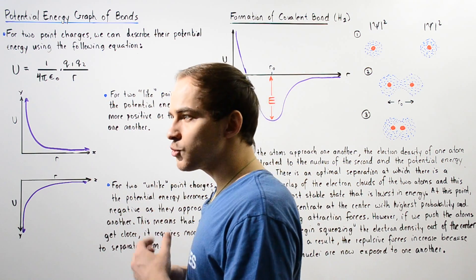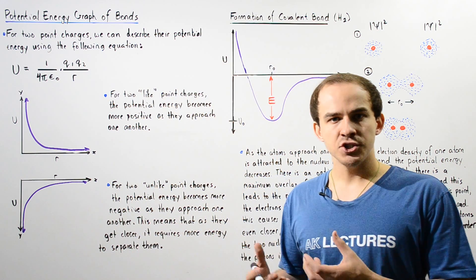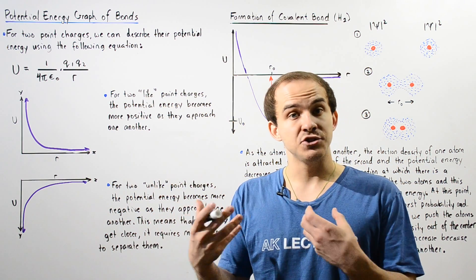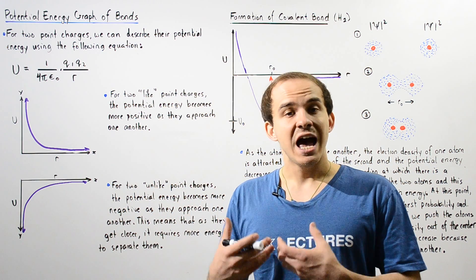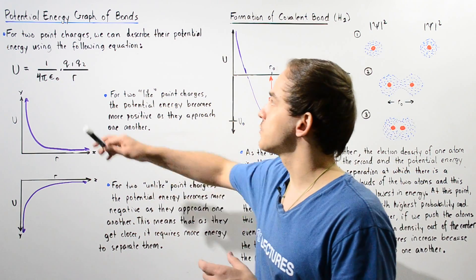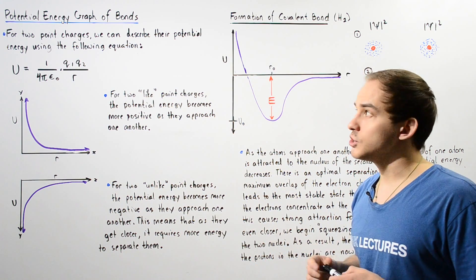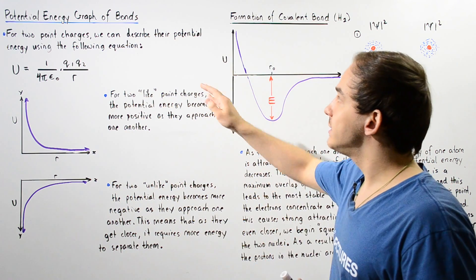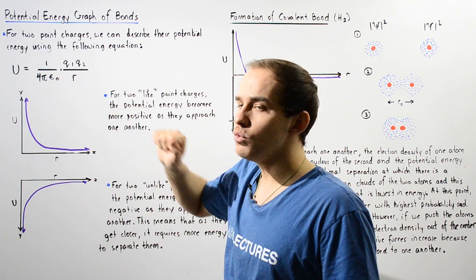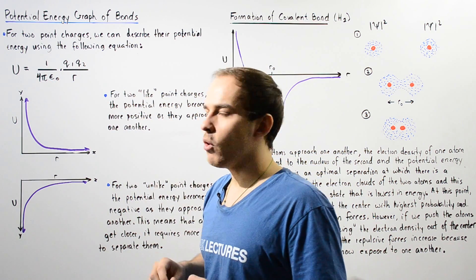So first, let's recall some basic information regarding point electric charges and the potential energy as a result of these point electric charges. For two point electric charges, we can describe their potential energy using the following equation.